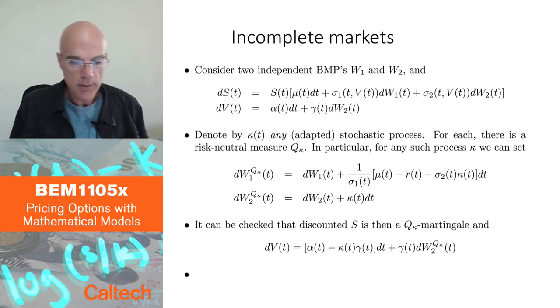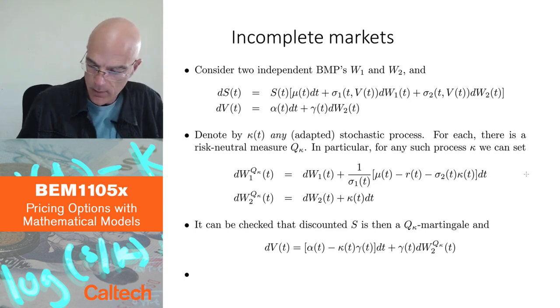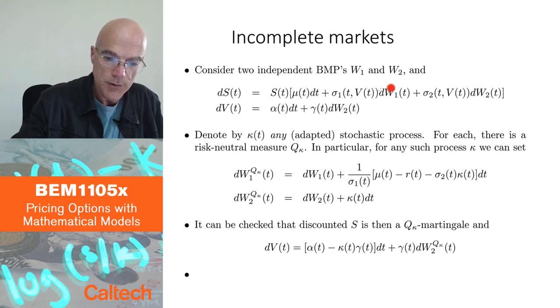Going back to kind of a general case with two Brownian motions. So suppose I put here two Brownian motions in S, but independent Brownian motions, so I need two to have correlation with this one.